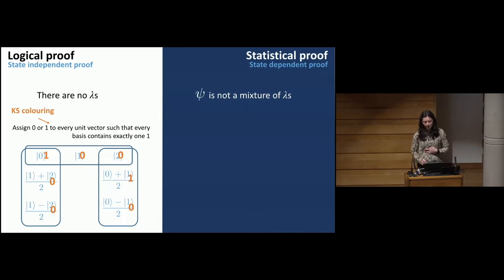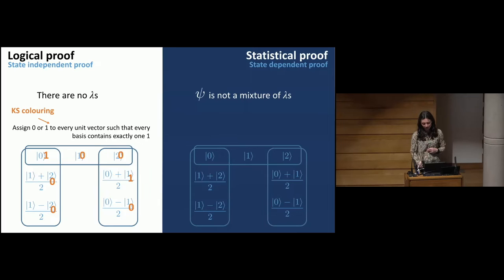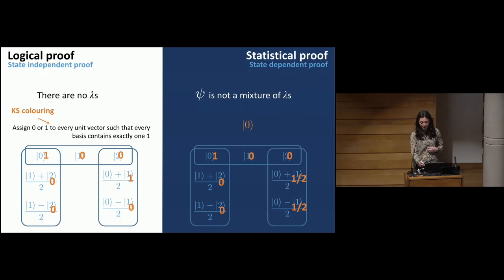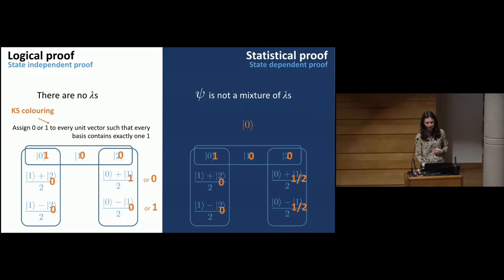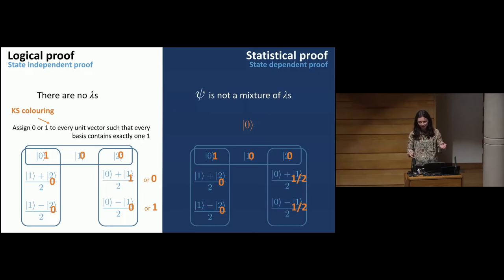Such an assignment of zeros and ones is known as a KS colouring — a Kochen-Specker colouring. For a statistical proof, we consider a given quantum state and see what statistics the measurements produce. We have ones and zeros everywhere but also some halves — non-deterministic probabilities. The idea is to create these statistics by mixing together deterministic statistics. Again, with different bases and states, you can demonstrate contextuality, though these proofs tend to look more complicated.